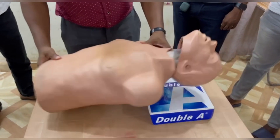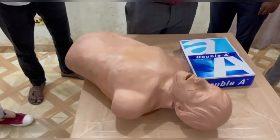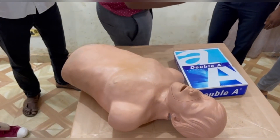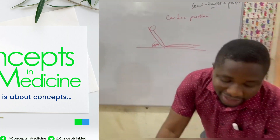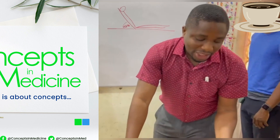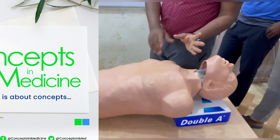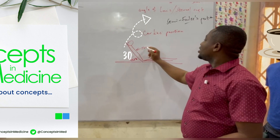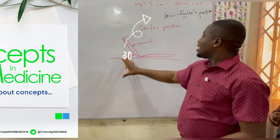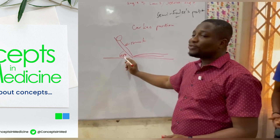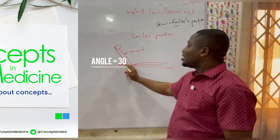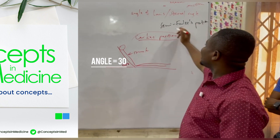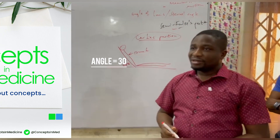After gaining consent, if the patient is lying down flat, you adjust the bed by putting the patient in the cardiac position. The cardiac position is where the trunk of the patient and the bed make an angle of 30 degrees. This is also known as the semi-Fowler's position, which is used most often in obstetrics.